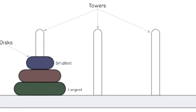Rule one: you can only move one disc at a time. You can't just take all two or three and put them onto the tower — that's cheating. Rule two: only the top disc can be removed. In our first picture, it's only the topmost disc — the smallest disc — that you can move. If it were the middle disc, that's the only one you could move.